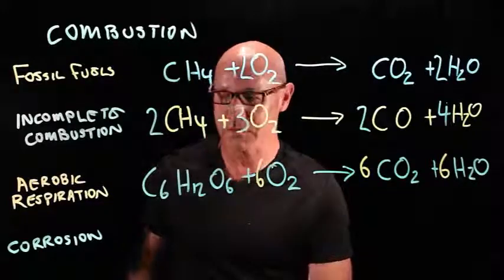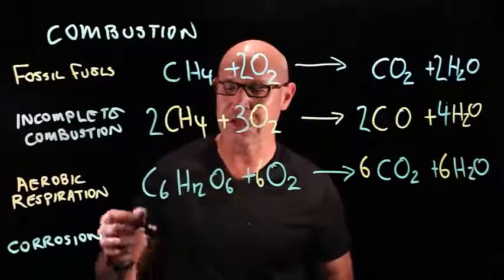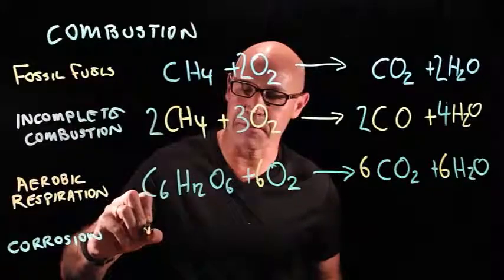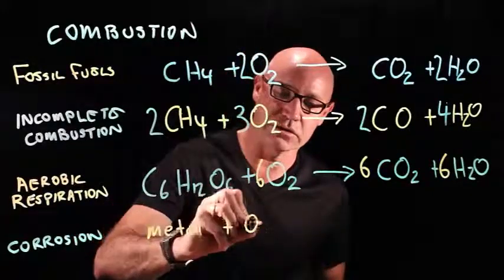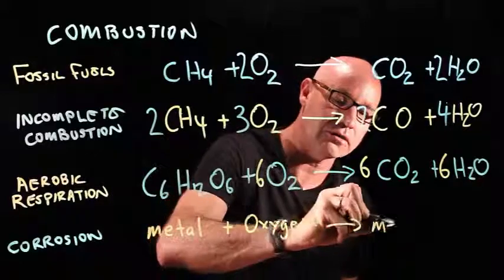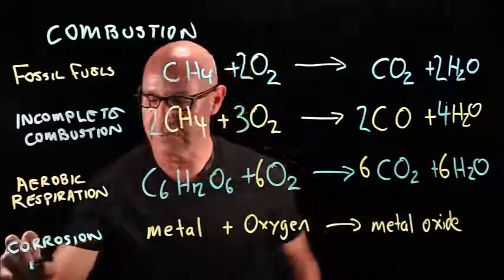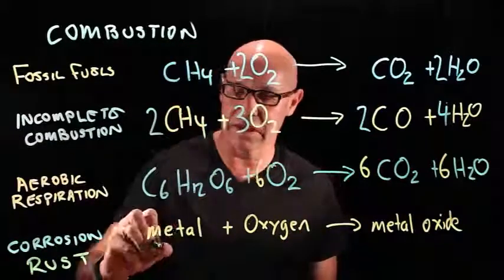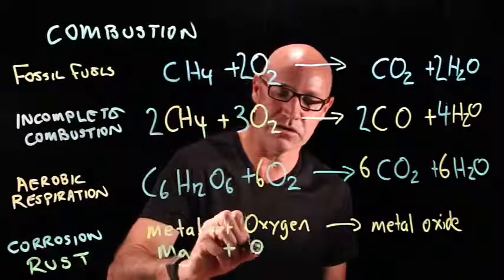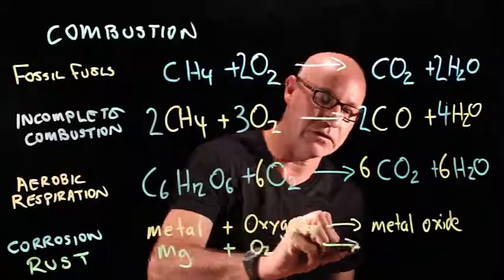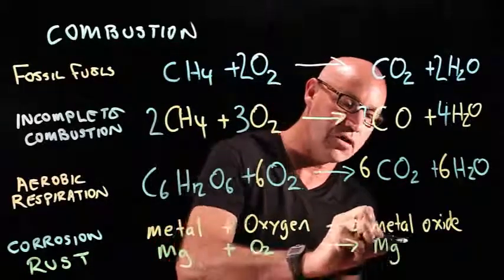The last type of combustion reaction that we're going to look at is corrosion. And this is where we've got a metal and oxygen that gives us a metal oxide. Now, this is commonly known as rust. So here's an example. Let's do magnesium plus oxygen gives us magnesium oxide.